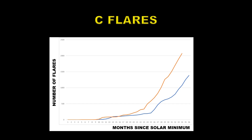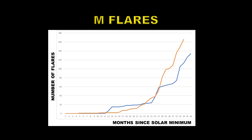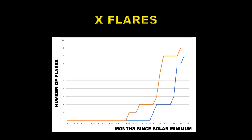Moving to M flares — 10 times brighter than C flares — Solar Cycle 25 is again outperforming Solar Cycle 24. Looking at X flares, Solar Cycle 25 is at least two X flares ahead of Solar Cycle 24 at this stage. That's not a huge difference, but X flares are very rare events — we've only had nine so far this cycle, compared to seven at this stage in the last cycle.